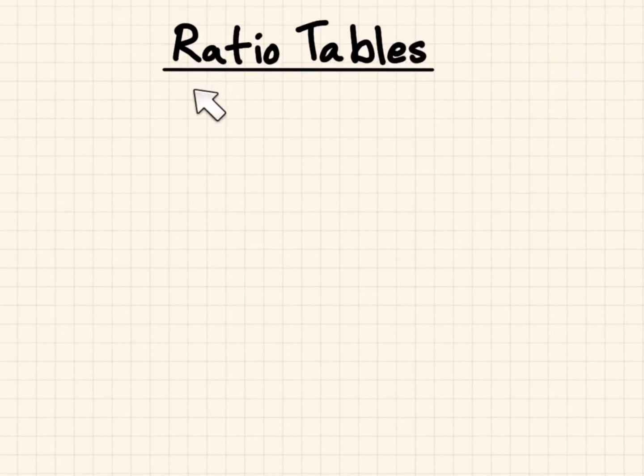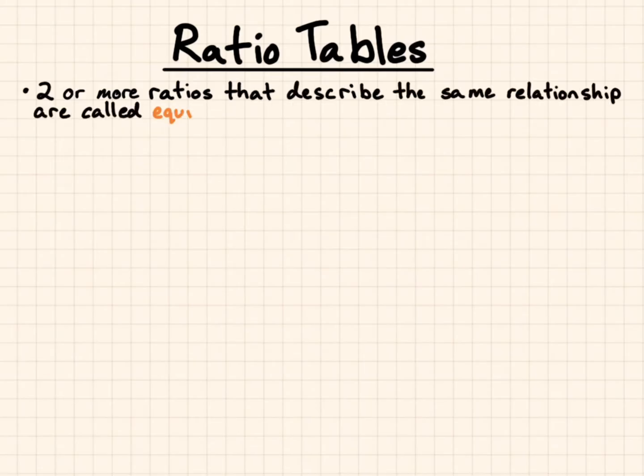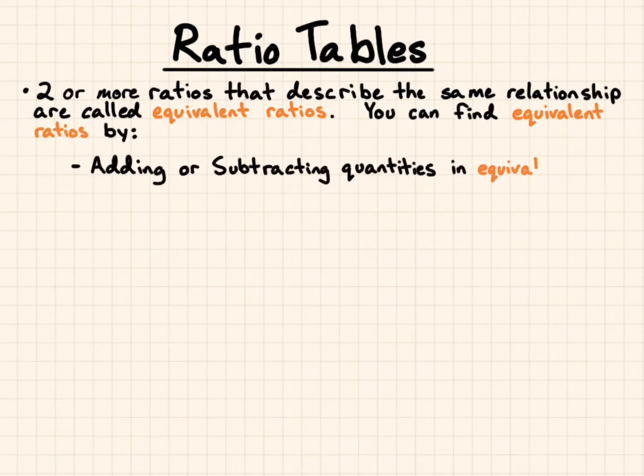This video tutorial is to go over our notes for ratio tables. Two or more ratios that describe the same relationship are called equivalent ratios. You can find equivalent ratios by adding or subtracting quantities in equivalent ratios.